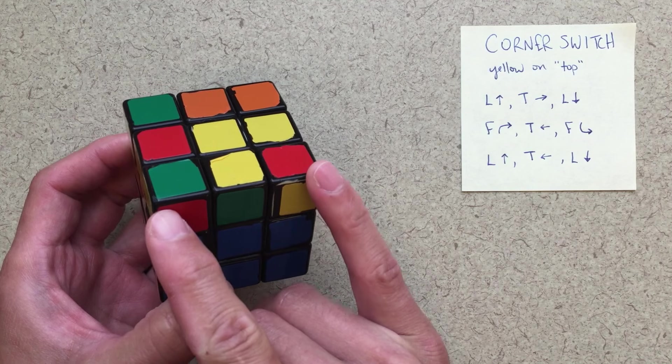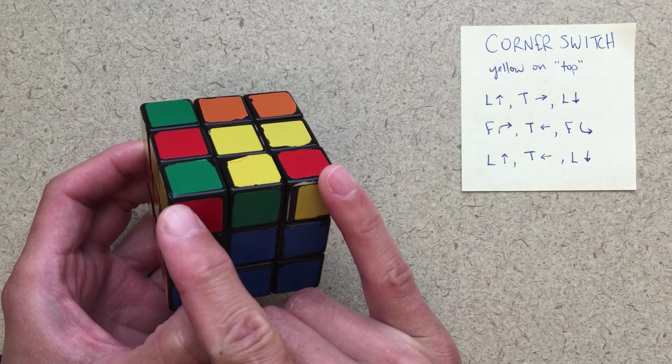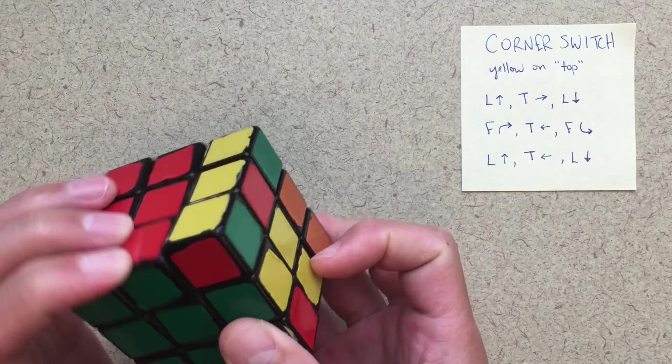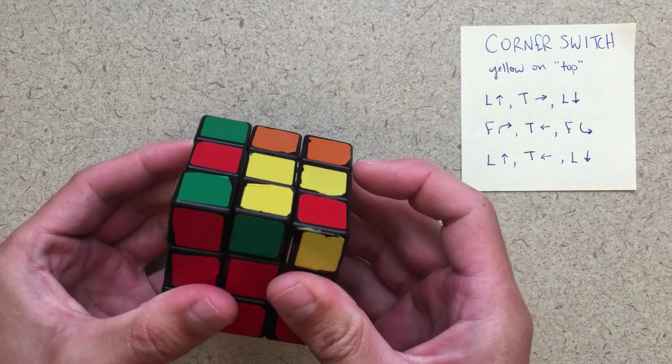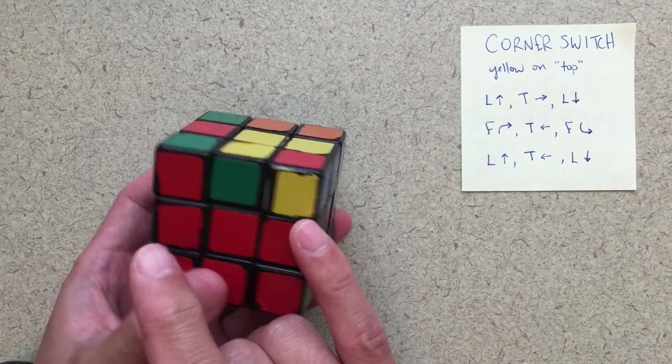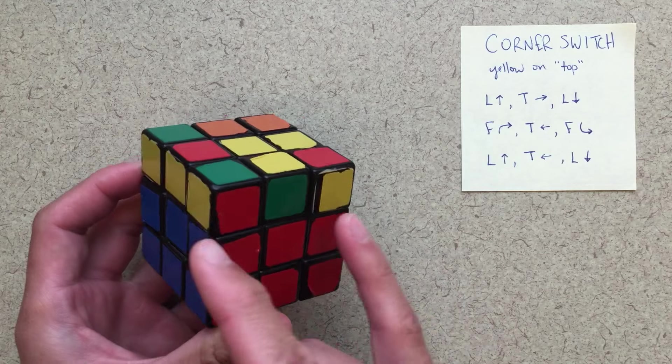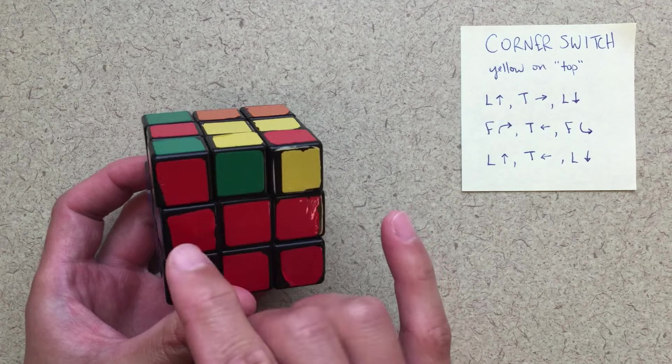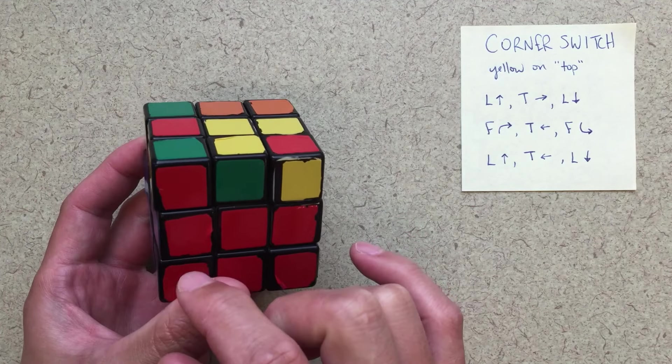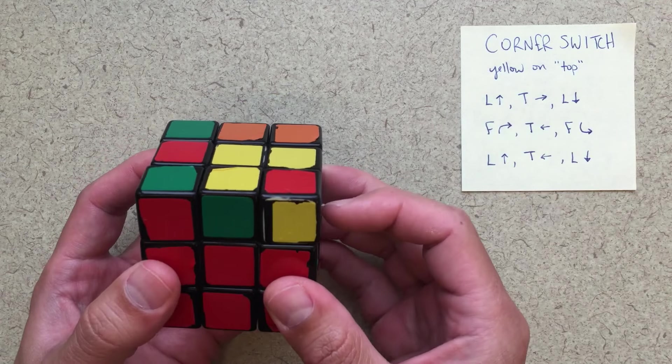I've got two reds next to one another. So I'm going to go ahead and just take those two reds and line them up with the red side. And I can see, well, these two pieces, they need to be switched, right? So if I switch these two pieces, that's going to put this in the correct spot. And that's going to put this in the correct spot.